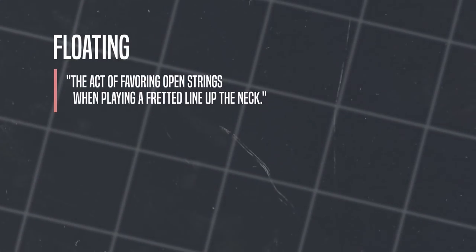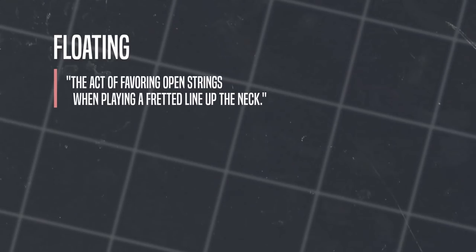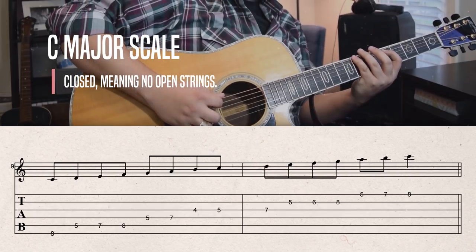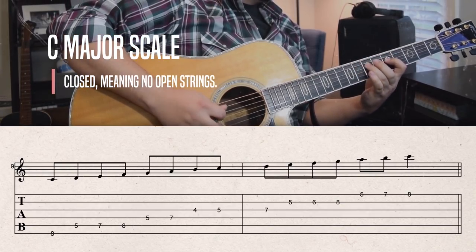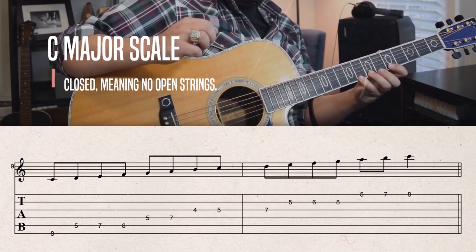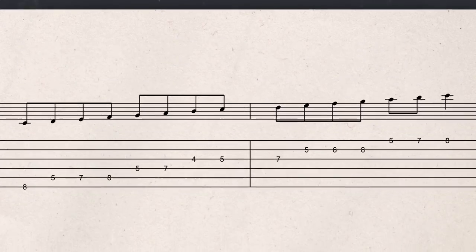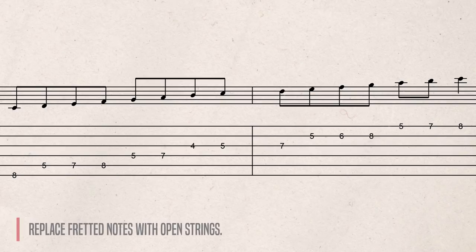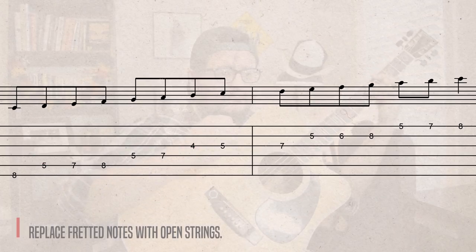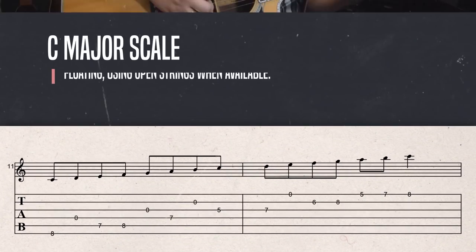That's actually just a really specific example of floating. Floating is the act of favoring open strings when playing a fretted line up the neck. For instance, let's use a closed C major scale position, then find all the notes that could be replaced by open strings — these are all of the notes you use when you tune a guitar — and replace them with their open string counterparts.